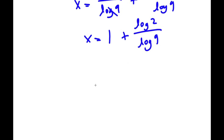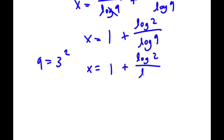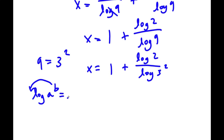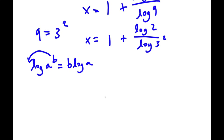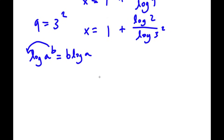Now log 9 — well, 9 is the same thing as 3 squared. So if I replace 9 with 3 squared, I get x is equal to 1 plus log 2 over log 3 squared. Now remember the property of logarithms that states if we have log a to the power of b, we can move our exponent b to the front of the logarithm. So this would equal b times log a. So log 3 squared becomes 2 times log 3.